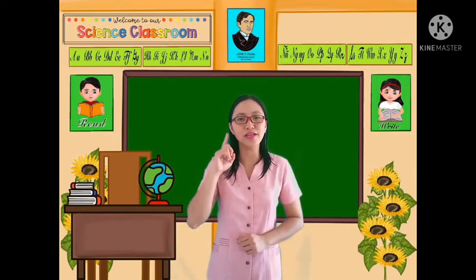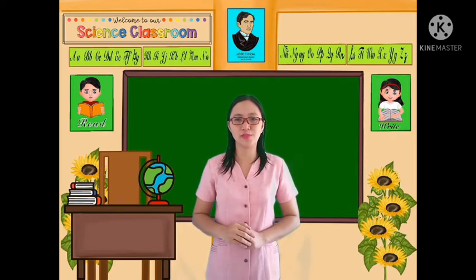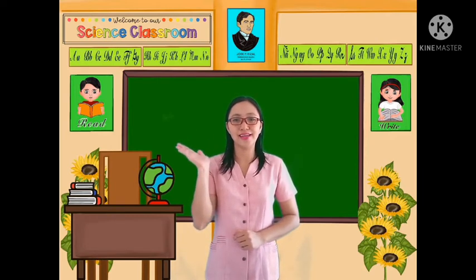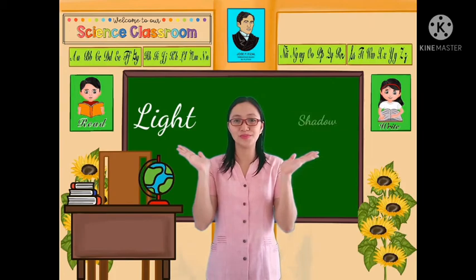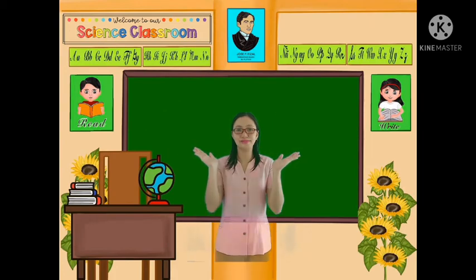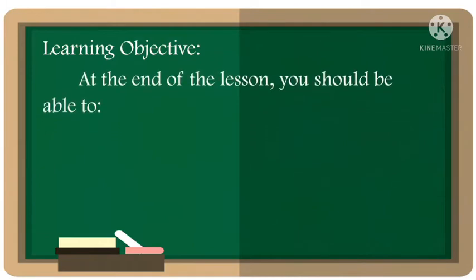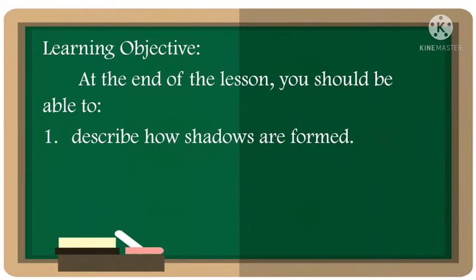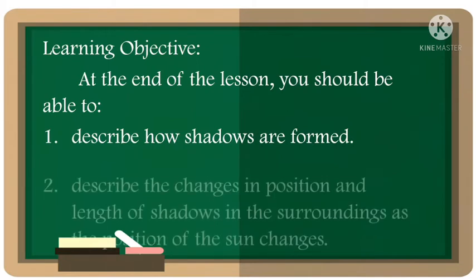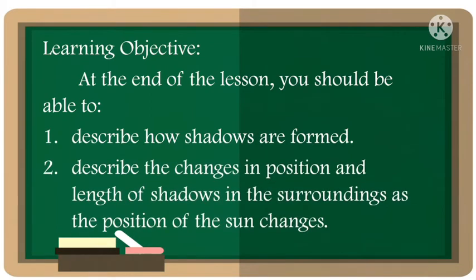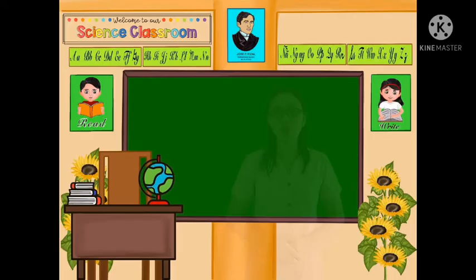Listen carefully and join me in exploring light and shadow. For today's learning objective, at the end of the lesson, you should be able to: 1. Describe how shadows are formed. 2. Describe the changes in position and length of shadows in the surroundings as the position of the sun changes.